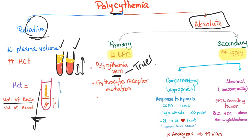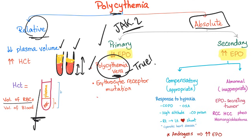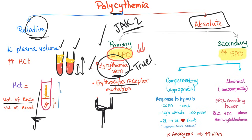On the other hand, absolute polycythemia has two types: primary or secondary. Primary is — mutation, cancer — such as polycythemia vera. We have JAK2 leading to stimulation of the EPO receptor, leading to increased number of red blood cells. Or there can be an erythrocyte receptor mutation — not JAK2, but a mutation in the EPO receptor itself. In both cases, EPO level in the plasma will be low — negative feedback. If you have lots of red blood cells, why bother secreting EPO? We already have enough.